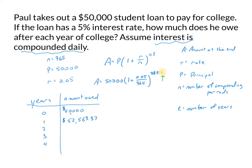Filling in the rest of the table — all values rounded to the nearest penny — at the end of year 2 we owe $55,258.17; at the end of year 3, $58,091.12; and at the end of year 4, $61,069.30.